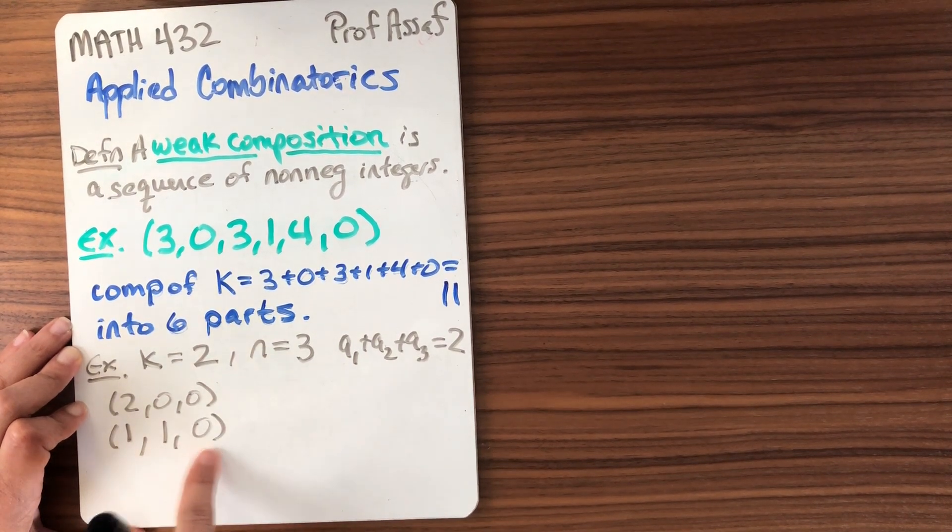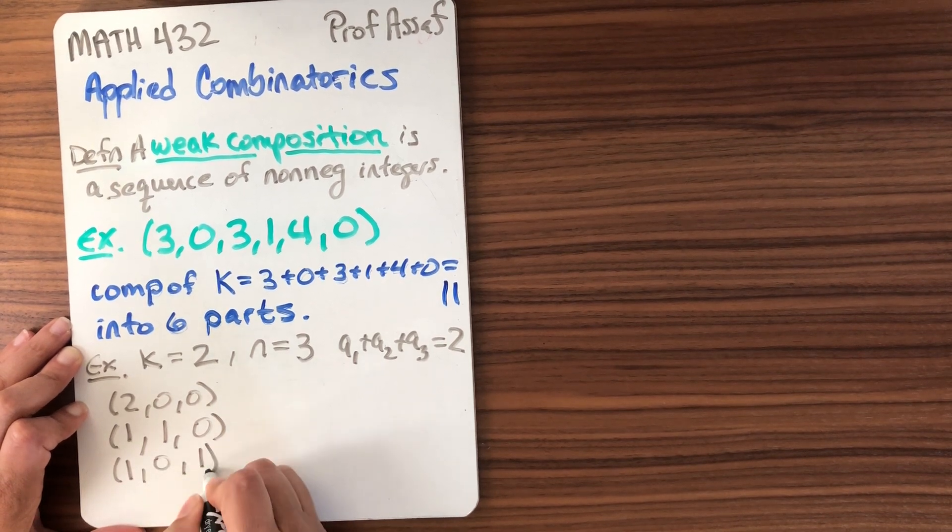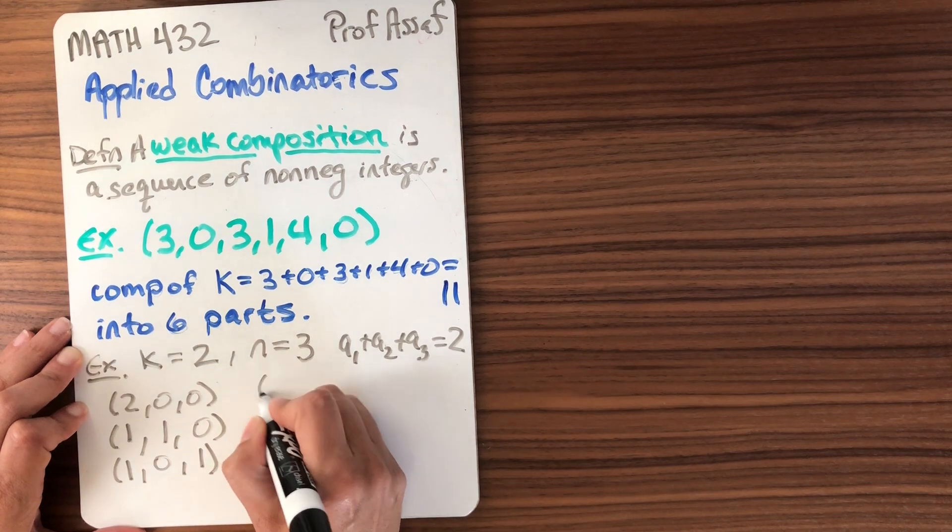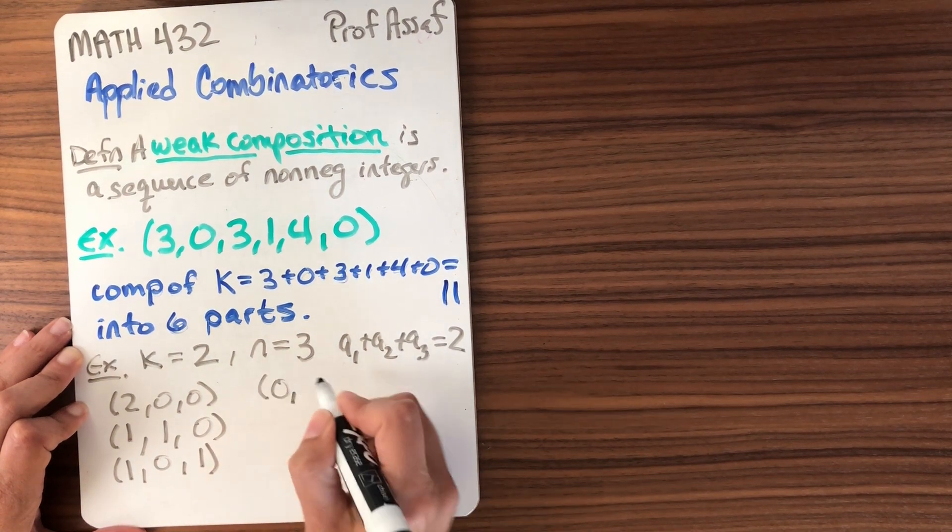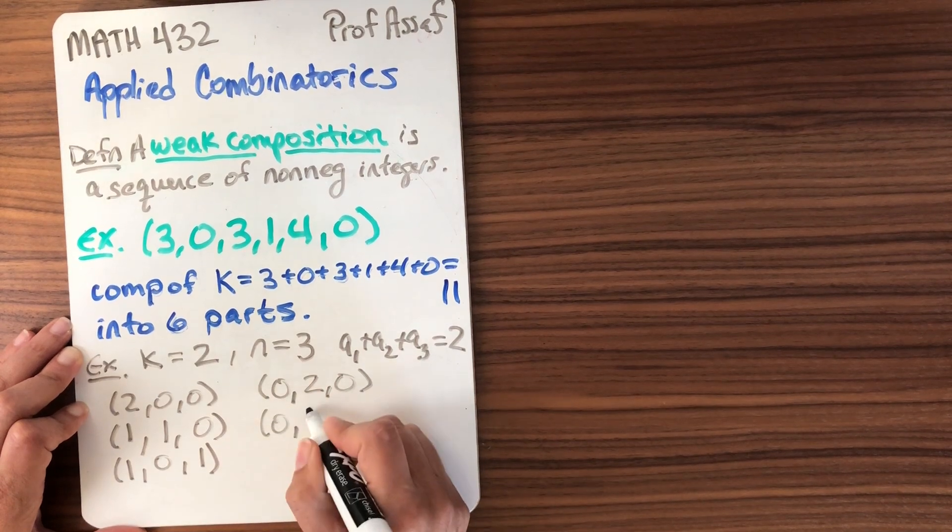And now this is the first part I can change. I'll decrement that one. So I'll get 1, 0, 1. That's another one. Well that's it for starting there, but I could keep going. I could start with a 0, of course, and then I could make the next part as big as possible. I could start with 0, 1, 1.